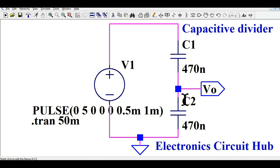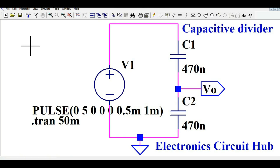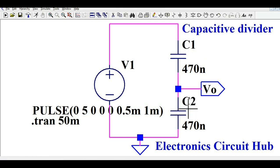Let us understand how the capacitive divider works. The capacitive divider offers zero impedance at DC voltage and offers impedance at AC source, since the reactive impedance of a capacitor is given by 1 divided by 2πFC. The impedance across C1 is XC1 = 1/(2πFC1) and across C2 is XC2 = 1/(2πFC2).